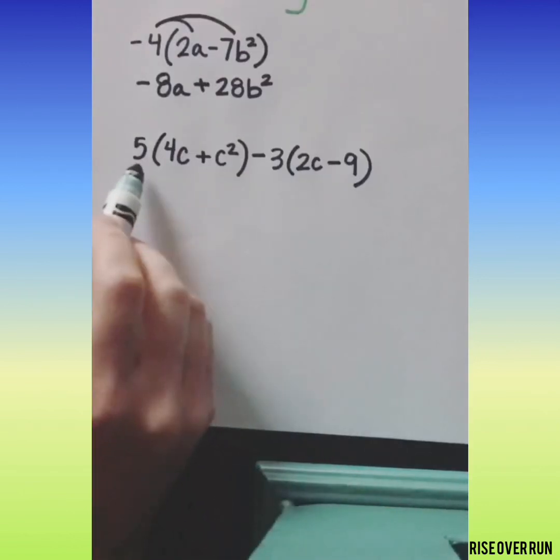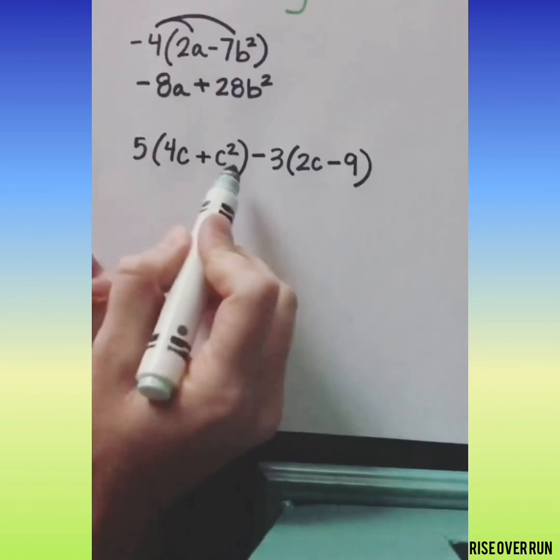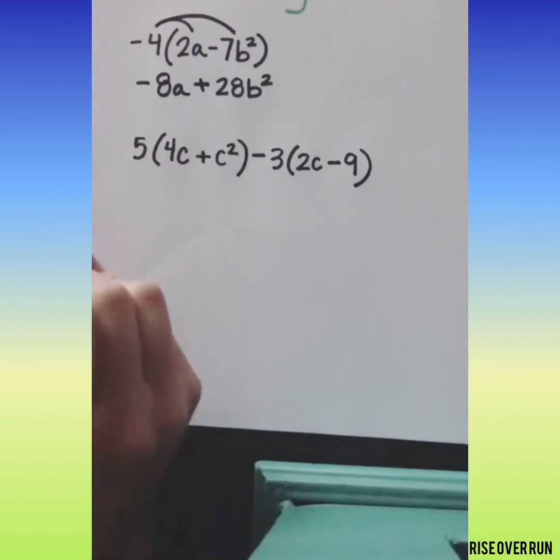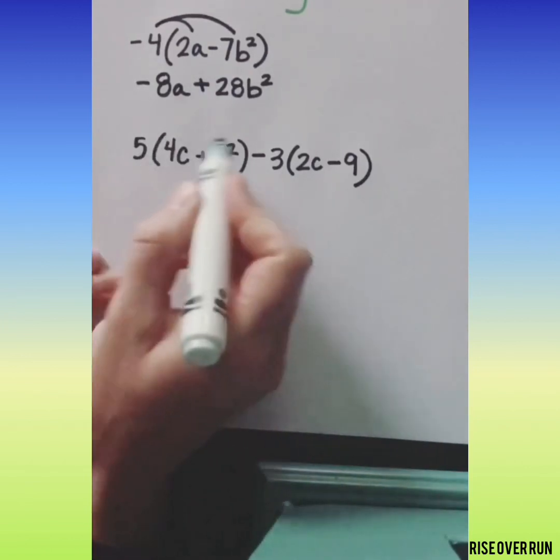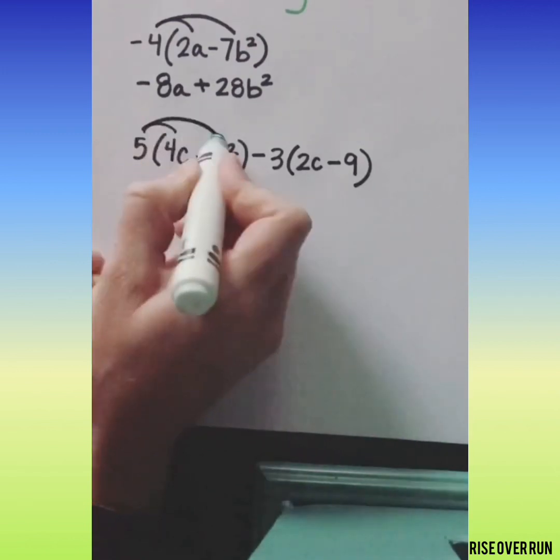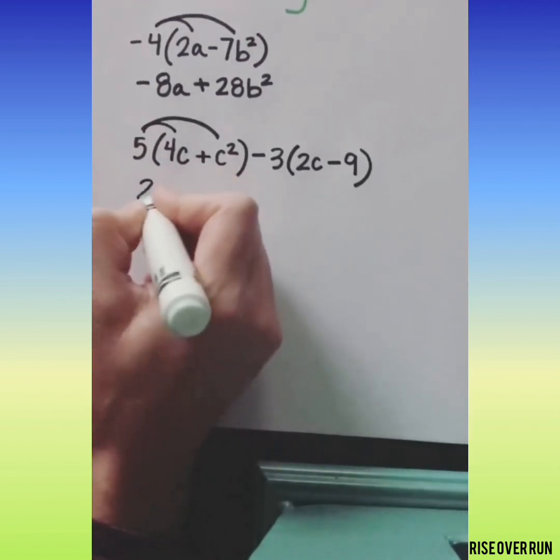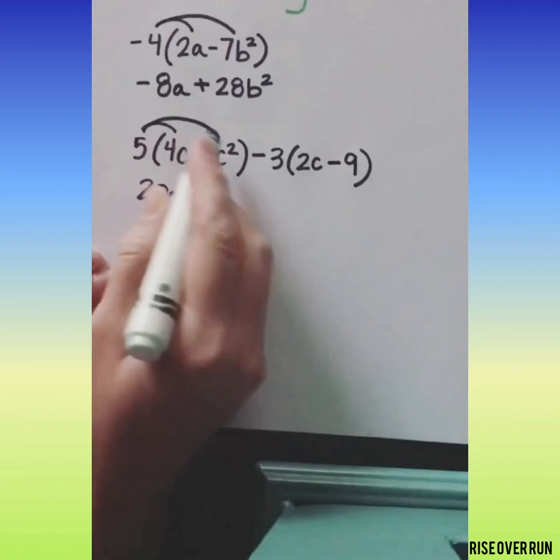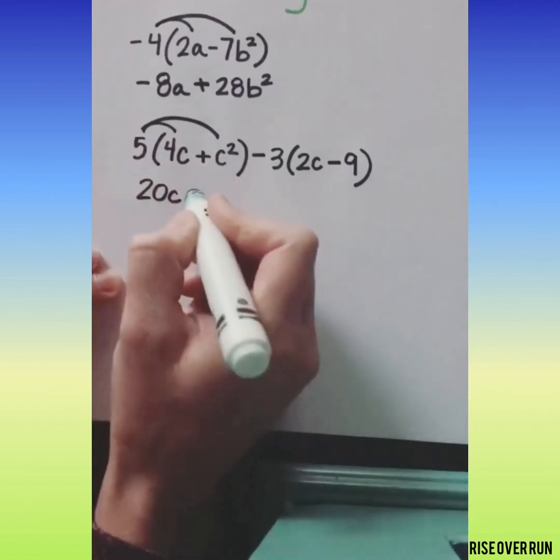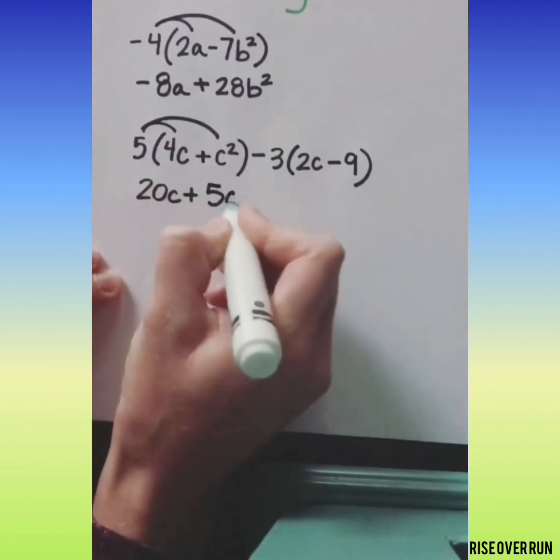Let's try this one. First we need to distribute before we try to combine any like terms. So let's distribute this first parentheses. 5 times 4c is 20c. 5 times c squared is 5c squared.